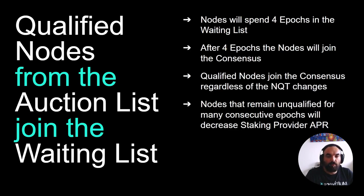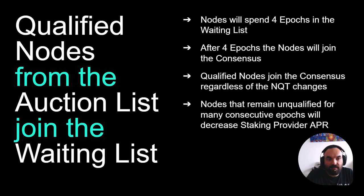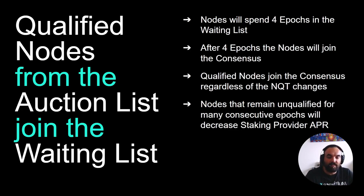These nodes from the waiting list will join the consensus regardless of what happens in those four waiting epochs, even if the NQT has changed. Once qualified and in the waiting list, nodes will validate after four epochs. One important remark: staking providers with nodes that remain unqualified for multiple consecutive epochs will have their APR decreased because they will have fewer nodes validating — something to keep in mind.